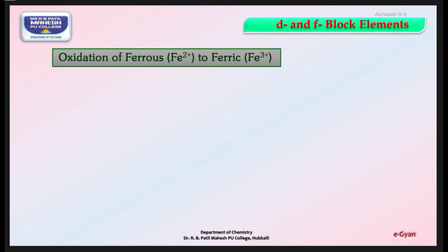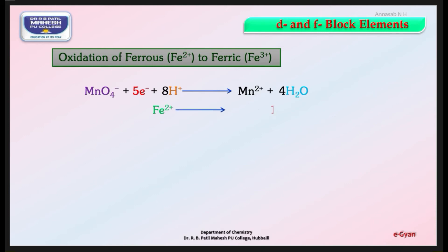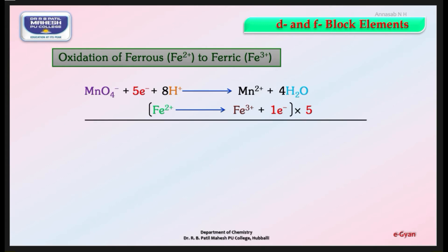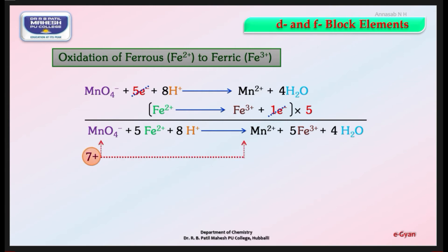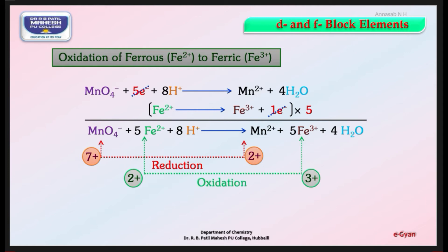Oxidation of ferrous (Fe²⁺) to ferric (Fe³⁺): MnO4⁻ gains 5 electrons with 8H⁺ to give Mn²⁺ and 4H2O. Fe²⁺ loses 1 electron to give Fe³⁺. Multiplying the second equation by 5, the final balanced equation is: 2MnO4⁻ + 5Fe²⁺ + 8H⁺ → 2Mn²⁺ + 5Fe³⁺ + 4H2O. Mn changes from +7 to +2 (reduction); Fe changes from +2 to +3 (oxidation).